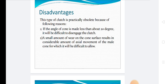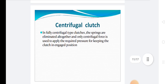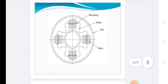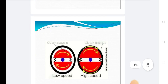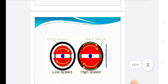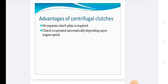In a fully centrifugal type clutch, the springs are eliminated altogether and only centrifugal force is used to apply the required pressure for keeping the clutch in the engaged position. In the diagram, there is a flat spring, guide, rim, and shoe. This shows the clutch at low speed and at high speed when the shoes fly out. The advantage of a centrifugal clutch is that no separate clutch pedal is required and the clutch operates automatically depending upon the engine speed.